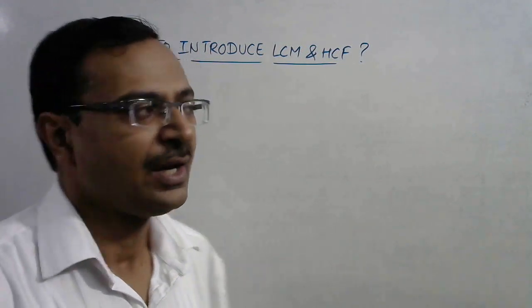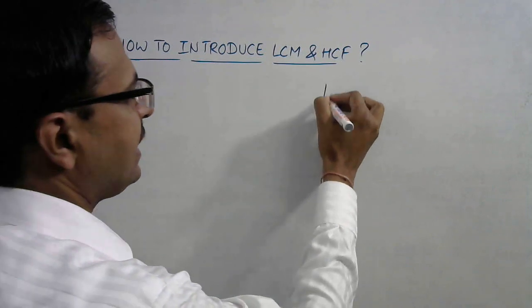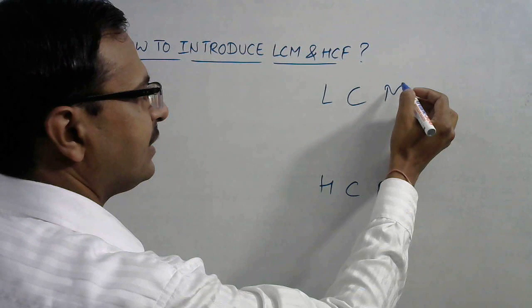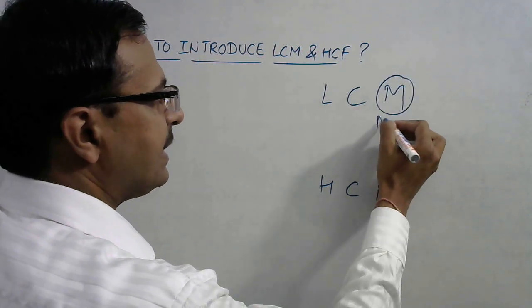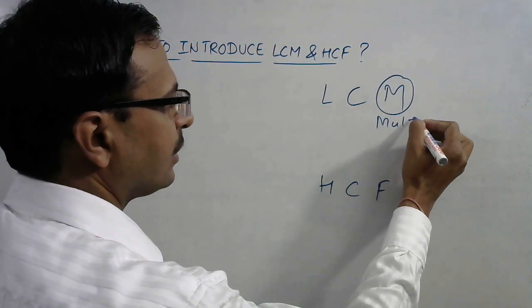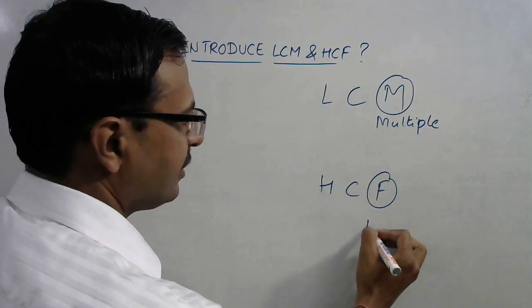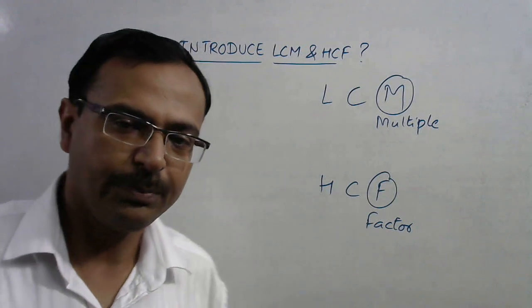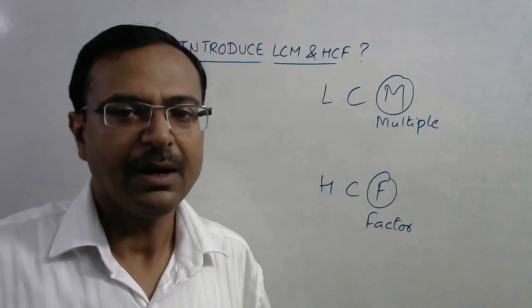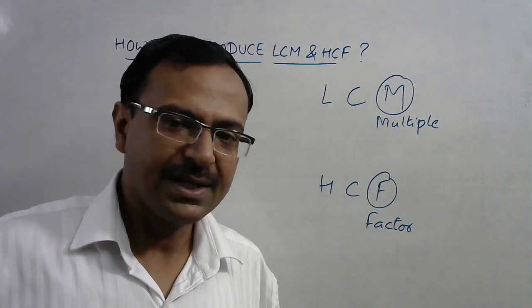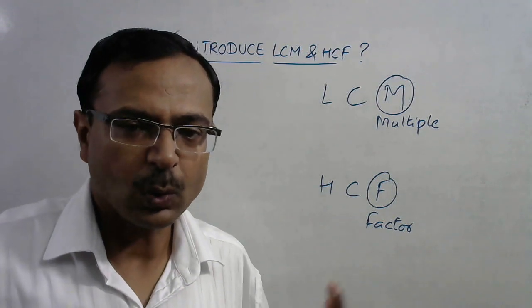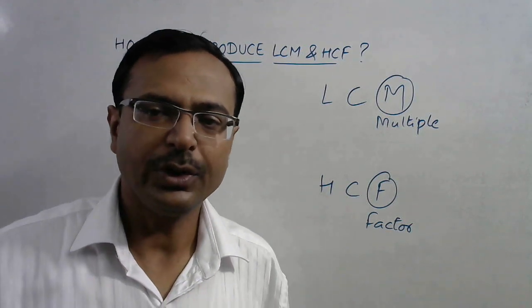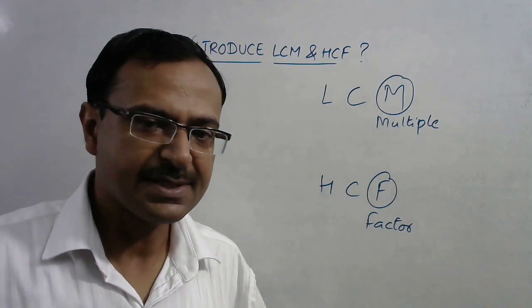LCM contains the word 'multiples' and HCF contains the word 'factor.' First of all, students have to be told what is meant by factors and multiples. Once they are clear about factors and multiples, only then the concept of LCM and HCF will be clear to them. So how do you introduce the concept of multiples and factors?